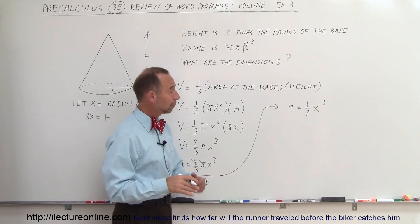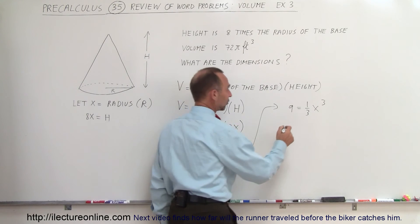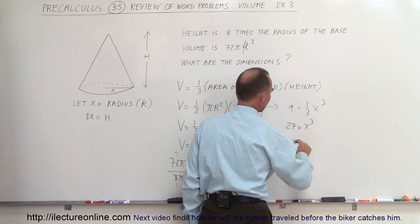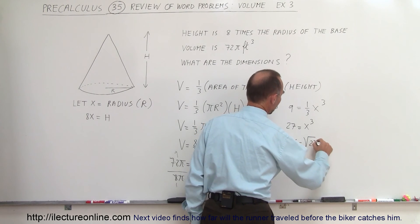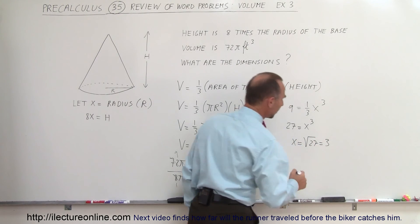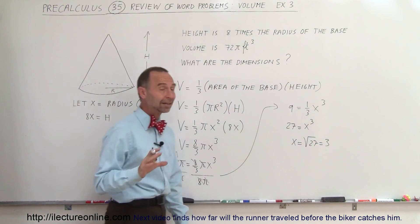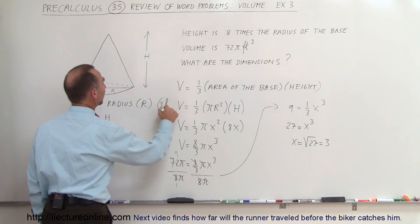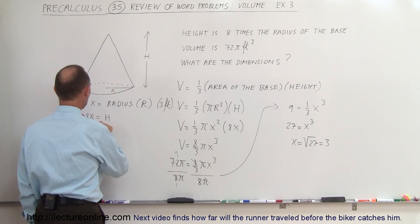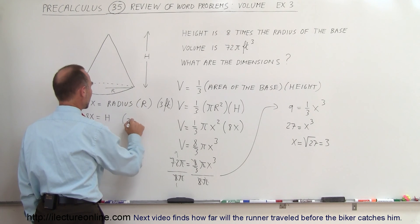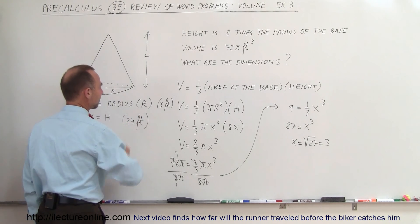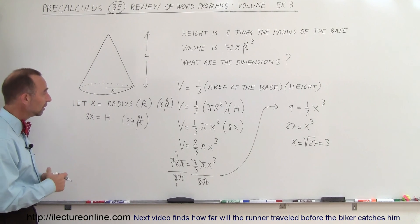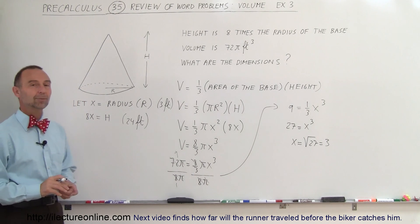Multiplying both sides by 3 to get rid of the fraction gives us 27 equals X cubed. Finally, X equals the cube root of 27, which equals 3. So the radius is 3 feet, and the height, which is 8 times that, is 24 feet. Let X equal the smallest dimension and the problem becomes fairly easy to work out.